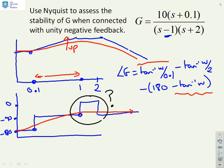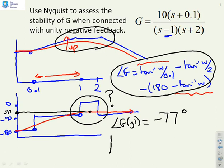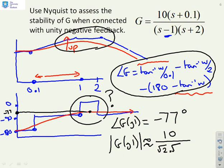To be on the safe side, calculate the argument of G(j1) by putting omega equals 1 into the formula. The result is minus 77 degrees, so at omega equals 1 we are in quadrant 4. For the modulus of G(j1), putting 1 into the zero term gives approximately 1, yielding 10 divided by root 2 times root 5, which is root 10 or approximately 3. For a sketch, that level of accuracy is sufficient.